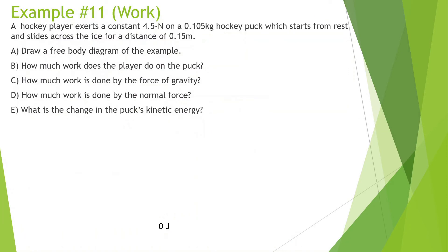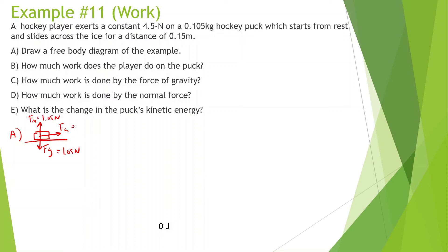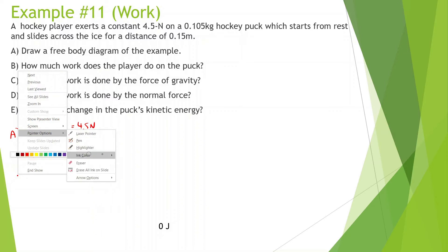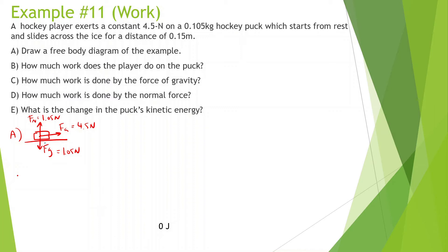Let's look at this problem. A hockey player exerts 4.5 Newtons on a 0.105 kilogram puck, which starts from rest and slides across the ice for a distance of 0.15 meters. For the free body diagram, we have the puck with force of gravity downward, force normal upward, and force applied to the right. There's no friction because it's on ice. Force of gravity is 1.05 N, force normal 1.05 N, force applied 4.5 N, and it's moving to the right 0.15 meters.